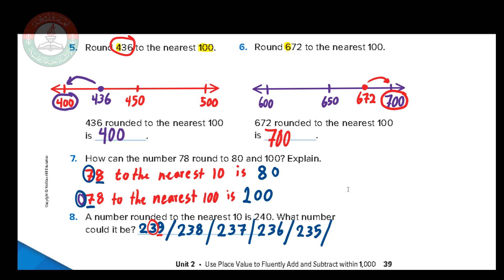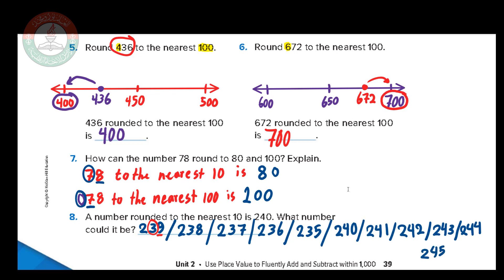So the smallest number that rounds to 240 is 235. Can it be 240 or more? Yes — 240 itself works because the 0 is weak, keeping the 4. Also 241, 242, 243, and 244 work since 1, 2, 3, 4 are all weak digits. But 245 does not work — 5 is strong and would push the 4 to 5, giving 250. So the numbers from 235 to 244 all round to 240. Thank you, hope you enjoyed this lesson!